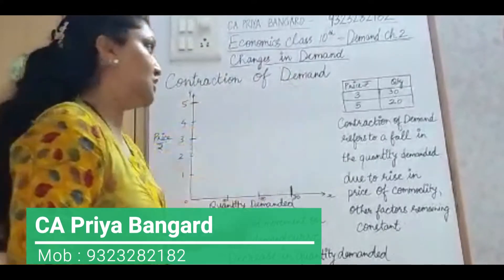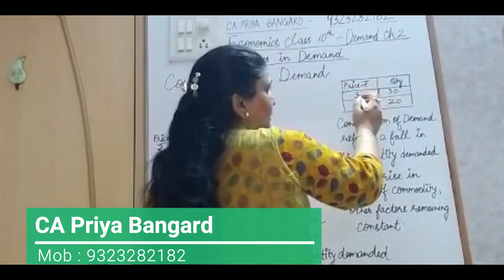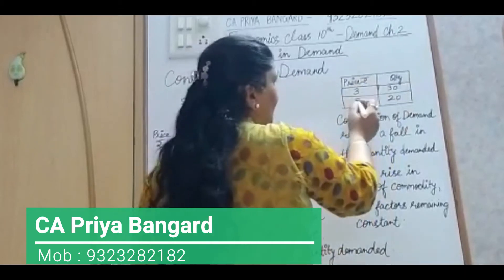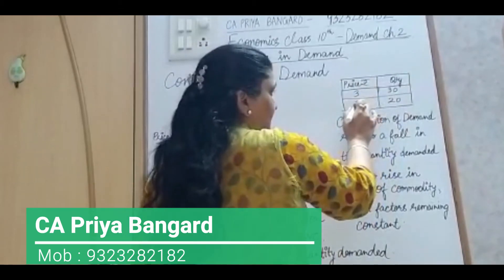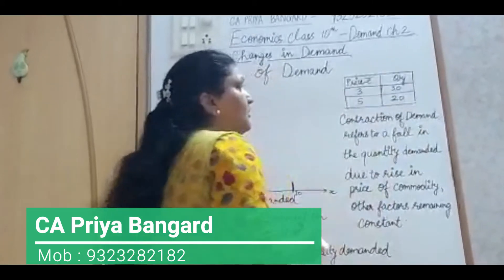So let's take a schedule. If the price is 3 per unit, the quantity demanded is 30 units. And if the price increases to 5, the quantity demanded decreases to 20.